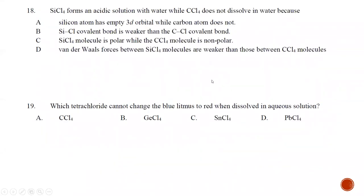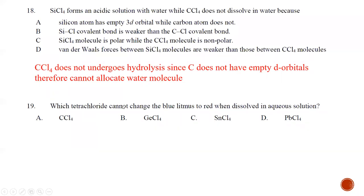Question number eighteen: silicon tetrachloride forms an acidic solution with water while CCl4 does not dissolve in water — why? It is due to the available empty d orbitals in Group 14 compounds such as silicon, germanium, tin, and lead. Carbon does not have empty d orbitals, so it cannot coordinate the water molecule and hence cannot undergo hydrolysis. The best answer is A.